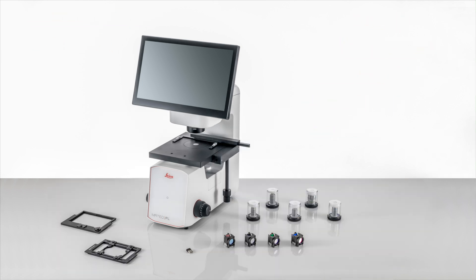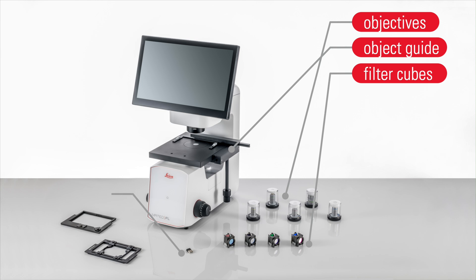Based on your purchasing configuration, you may receive the following components: objectives, an object guide, filter cubes, Wi-Fi dongle, barcode scanner and a thermal plate.